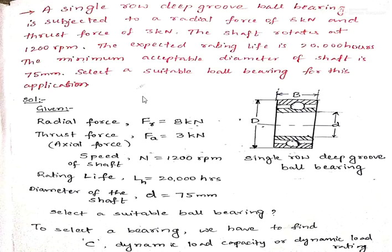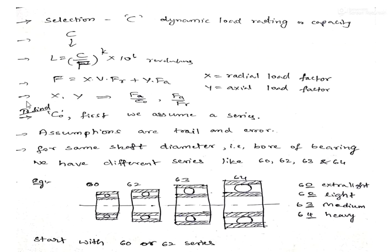Here we are asked to select a suitable ball bearing. The selection of bearing depends upon the dynamic C value, which is called dynamic load capacity or dynamic load rating. Let us see how to find out this C value. We will get C from the rating life formula: L = (C/F)^K × 10^6 revolutions.